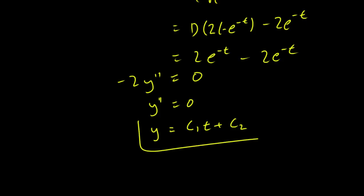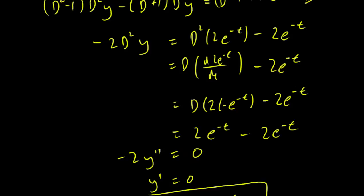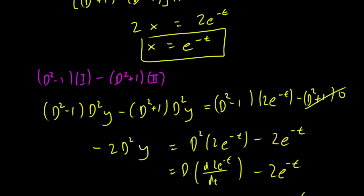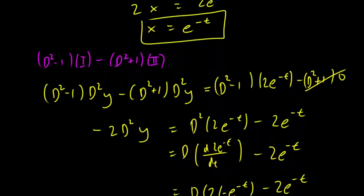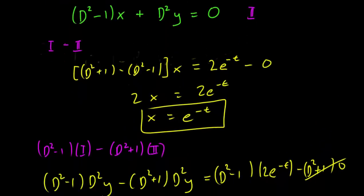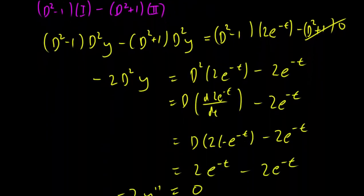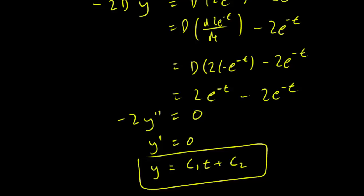So this is our solution, y equals c1*t plus c2, and x equals e^(-t). So we have two constants, and this was a degree 2 equation, so an order 2 equation. So we actually do have the appropriate number of constants, we don't have to do any more work.